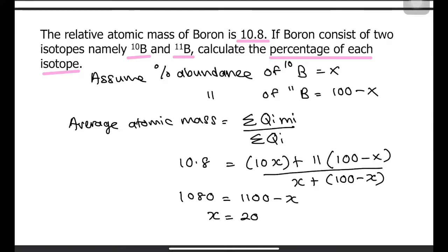Next, conclude your answer by saying therefore percentage abundance of boron 10 would be x with the value 20%, and the percentage abundance of boron 11 which is 100 minus x would be 80%.